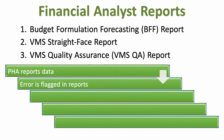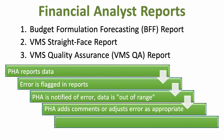PHAs must include comments to explain the change in data reported. If no comments are provided, the FA will notify the PHA that there is an error and the reported data for the current month is out of range. The PHA then has a chance to add comments to support the data reported. The FA will then review the comments and update the BFF, VMS Straight Face, and VMS QA reports to reconcile the errors.